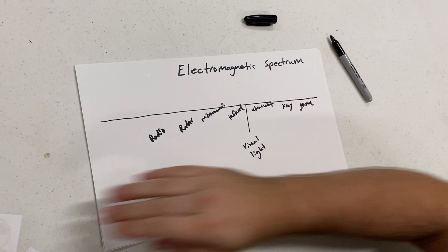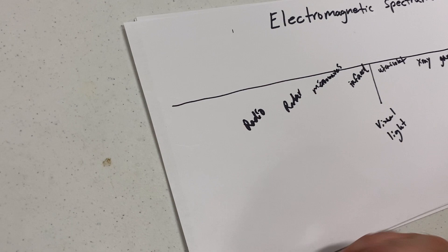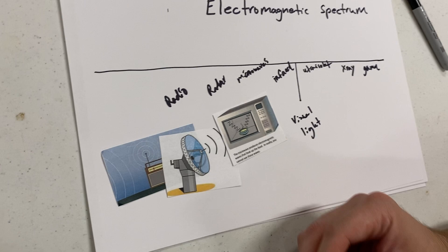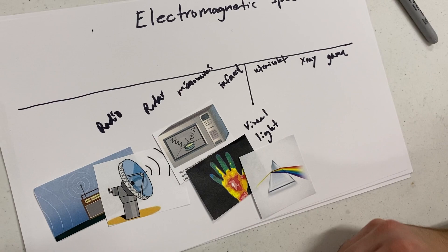This is a spectrum, so we're going to start on the lower side over here, which is all our radio waves, radar, microwave, infrared. And this is the important part we want to look at: this visual light, ultraviolet, x-ray, and gamma ray.